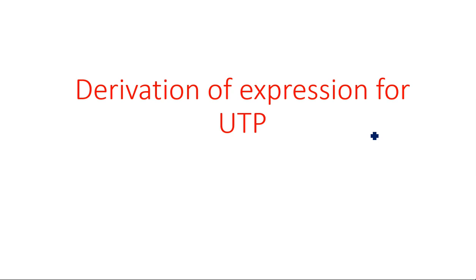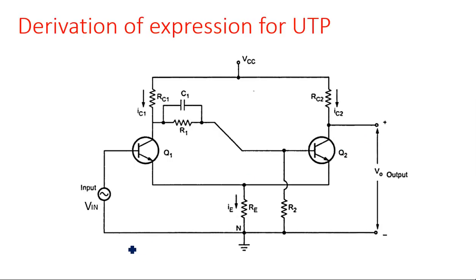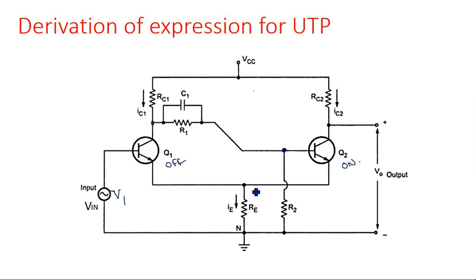Let us consider the input signal applied as V1 — the input voltage applied at the first transistor Q1. The second transistor Q2 is given with whatever voltage appears at that point, coming towards the base of transistor Q2. Assume the condition: Q1 is in off state and Q2 is in on state. This is the case we assume for the upper triggering point. If we invert these — Q1 on, Q2 off — then the lower triggering point will result.